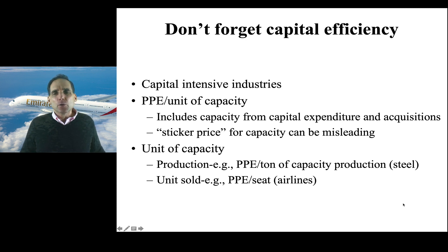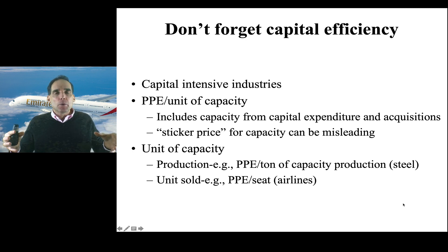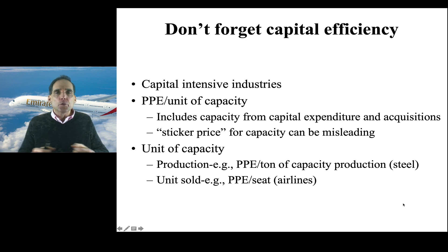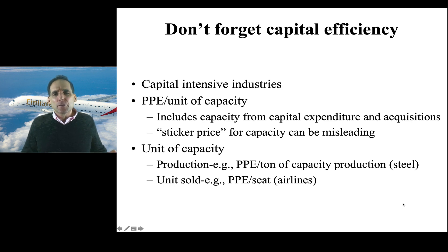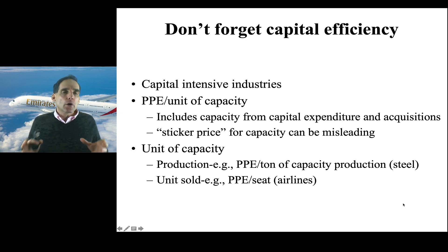When thinking about units of capacity, they vary by industry. In the steel industry, you'd look at PP&E per ton of production capacity rather than per factory, since factories vary greatly in how much steel they can produce. In the airline industry it might be PP&E per available seat; for Tesla it might be PP&E per car produced. The key point: yes, you want the operating costs visible on the income statement, but in capital-intensive industries it's also worth examining capital efficiency.